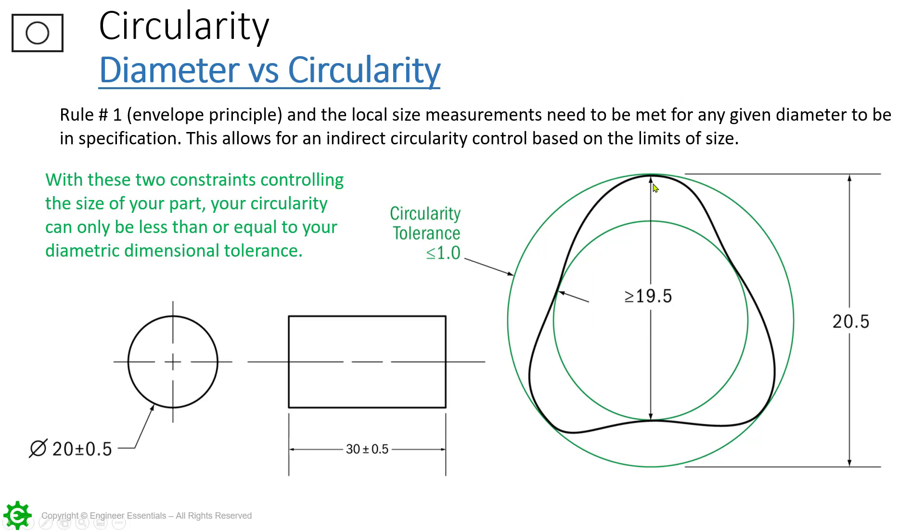LMC is the measurement. We always talk about when it comes to LMC like this on an external feature, same rule applies for internal. We have a maximum material condition boundary, we can set a gauge diameter for that, and we measure the LMC and those are our two-point measurements that must pass. Nothing can be smaller than LMC, nothing can be greater than maximum material condition with this external feature, meaning nothing can go beyond the envelope of 20.5.